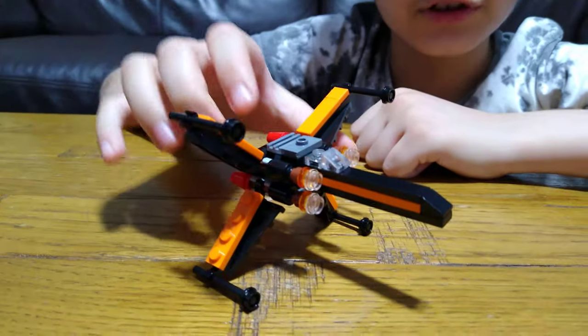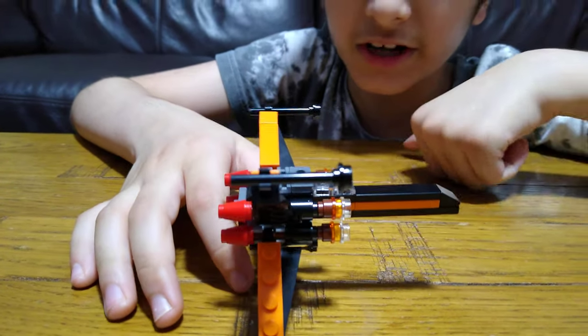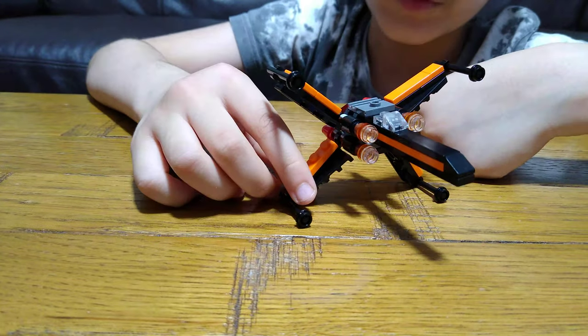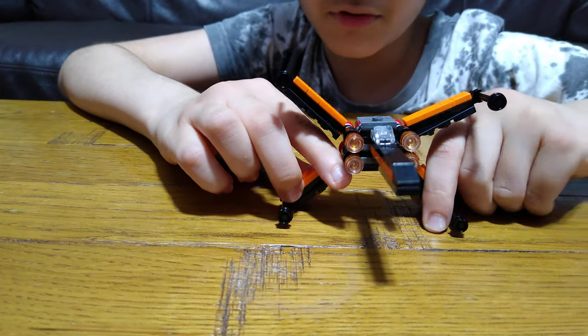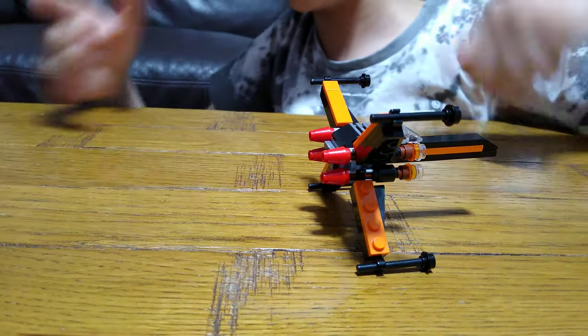Because Poe has two different X-Wings. He has an orange and black one, and then a white and red one. I've made the orange and black one. I'm not sure Lego has made the orange and black one, like big version of it.